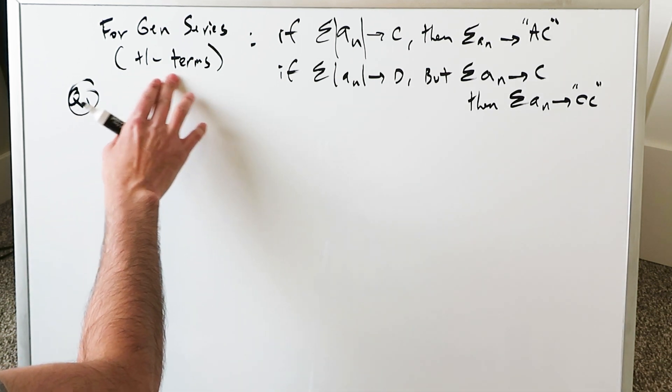Using u-substitution: let u = 8n+1, so du = 8 dn, meaning dn = du/8. The limits transform: u1 = 8(1)+1 = 9, u2 = infinity (written as limit as t→∞). The integral becomes (1/8)·∫ from 9 to t of (1/u) du, giving (1/8)·[ln u] from 9 to t = (1/8)·(ln t − ln 9). As t→∞, ln t → infinity, so this integral diverges. Therefore, this series is divergent.